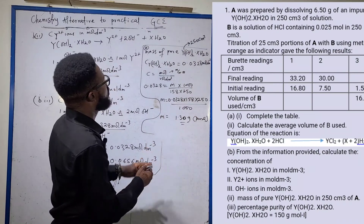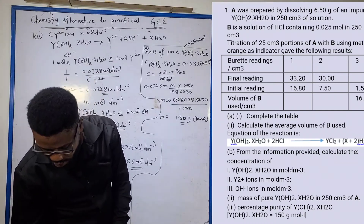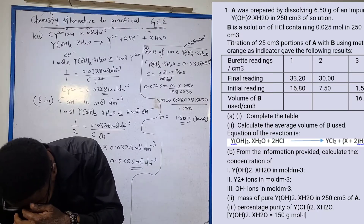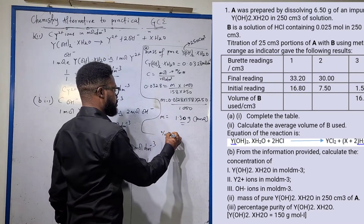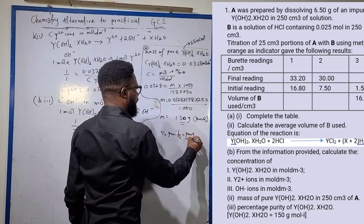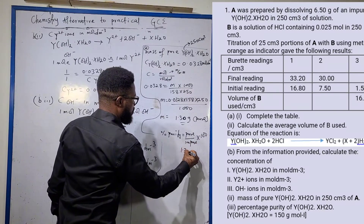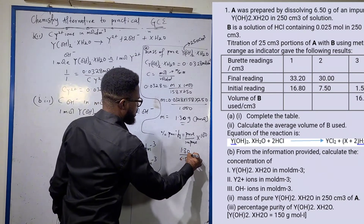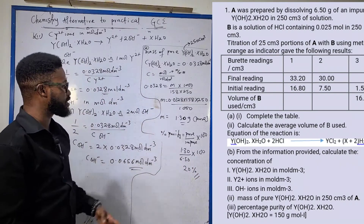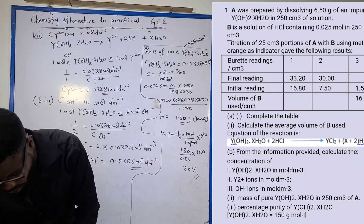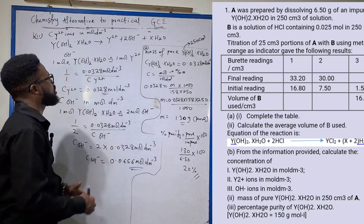The next question asks for the percentage purity of YOH₂·XH₂O. Percentage purity equals mass of pure substance divided by mass of impure substance, times 100. That is 1.30 divided by 6.50 times 100, which gives 20%. This means only 20% of the 6.50 g of impure solid dissolved in 250 cm³ of solution is pure.